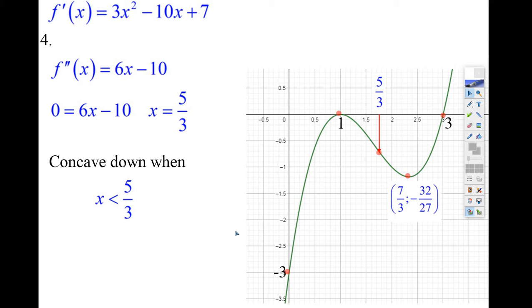And what they ask, they say, for which values of x is this function concave down? Well, whenever they mention the word concavity or concave down or concave up, or if they say something like inflection point, then what you have to do is you have to take the derivative, and here it is, 3x squared minus 10x plus 7, and you have to take the second derivative.